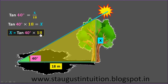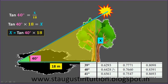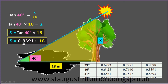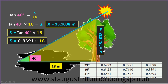X is equal to tan 40 into 80. Tan 40 is equal to 0.8391. So X is equal to 0.8391 into 80. The answer is X is equal to 67.128 meters.